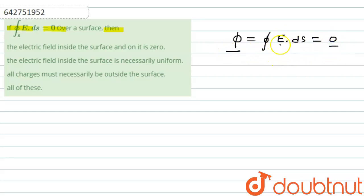Note the electric field intensity is 0. So option A is incorrect. And the electric field inside the surface is necessarily uniform. So students, as it is clear that the electric flux is 0.